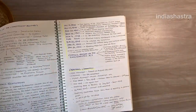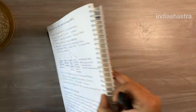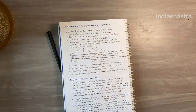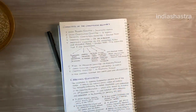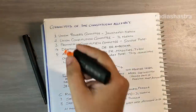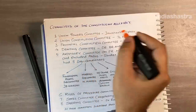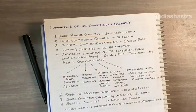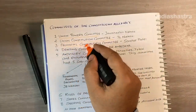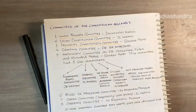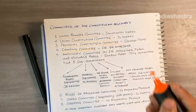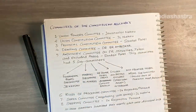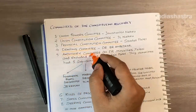The constituent assembly was divided into committees. These committees submitted their reports on which discussions and deliberations took place. There were committees like the Union Powers Committee, headed by Jawaharlal Nehru; the Union Constitution Committee, also headed by Nehru; the Provincial Constitution Committee, headed by Sardar Patel; and the Drafting Committee — one of the most important committees — headed by Dr. B.R. Ambedkar.